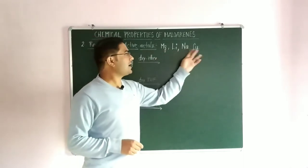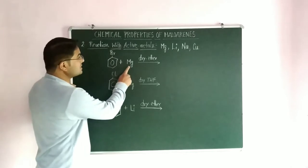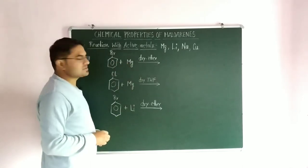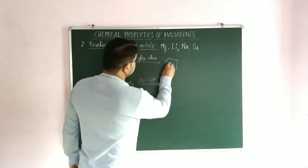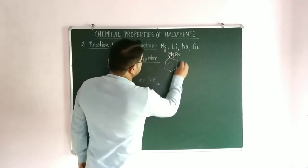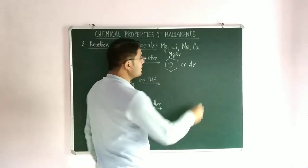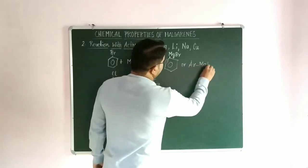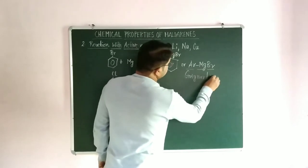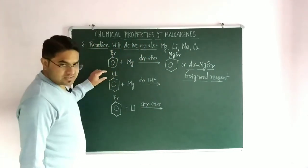Starting with the reaction of haloarenes: bromobenzene when treated with magnesium in the presence of dry ether forms a Grignard reagent. A similar reaction is observed for haloalkanes as well. For the aromatic ring, we represent it as Ar, so the product is ArMgX, which is known as the Grignard reagent — here formed by an aromatic compound.